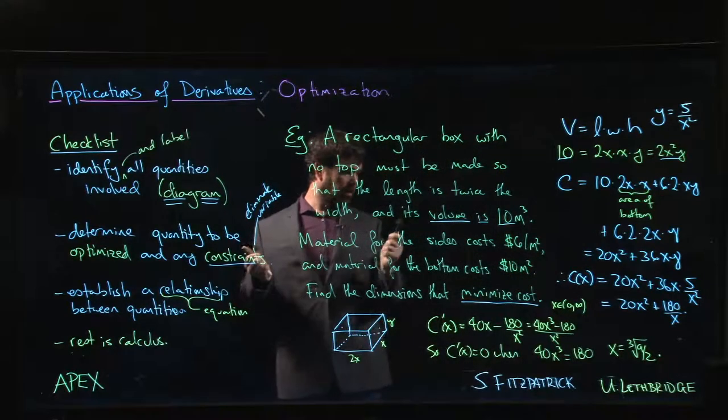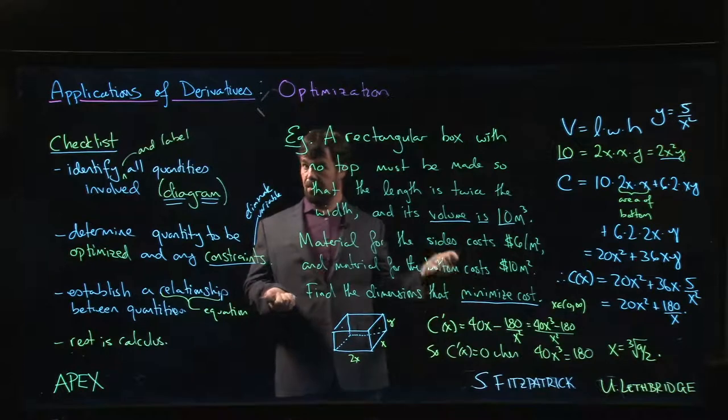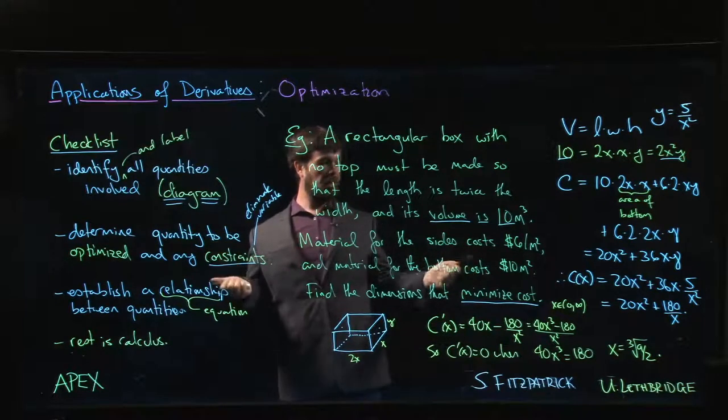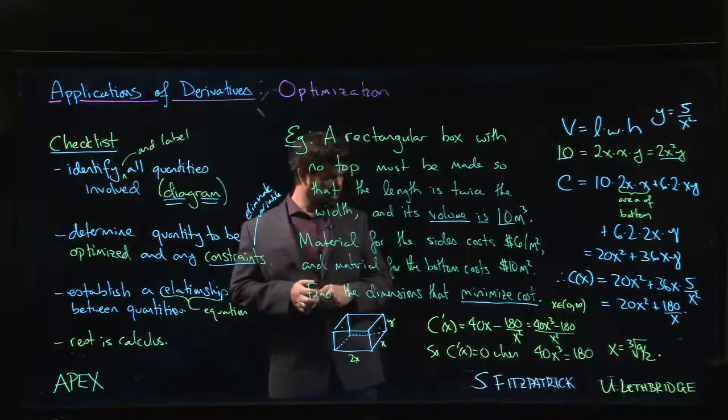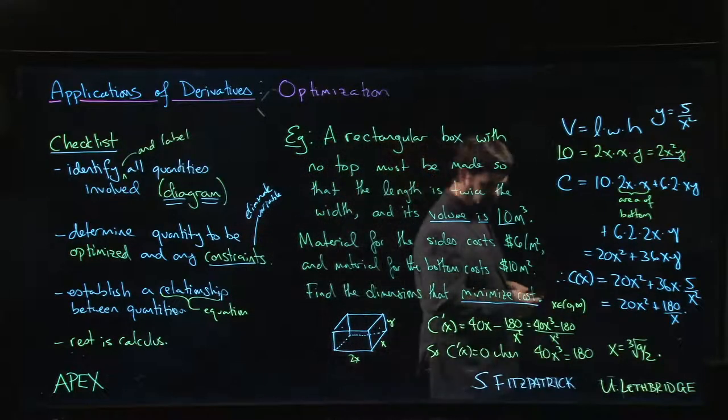So x is going to be cube root of 9 over 2. Now I've run out of board, but I haven't quite answered the question. So we'll just sort of say things aloud. The question was asking us to find the dimensions that minimize cost, so there are a couple of things I should do.